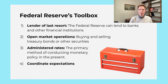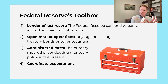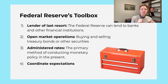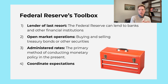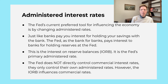Back to their toolbox: we've covered the first two tools, which are basically about making sure that our banking sector is solvent and there's not financial contagion and collapse. Now we're going to move onto their third tool, which is the administered rates — that's really how they're going to influence the short-term rates in the country. We'll talk about the fourth tool tomorrow.